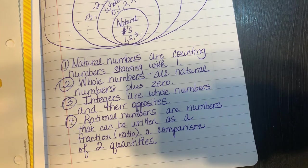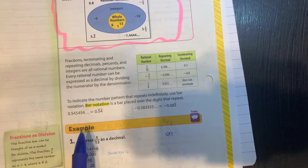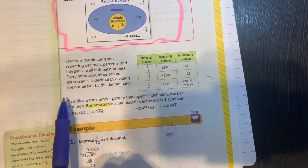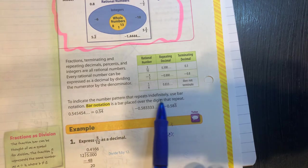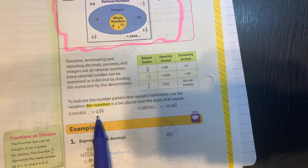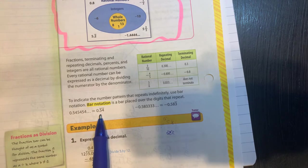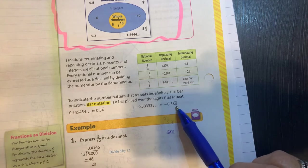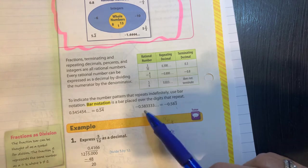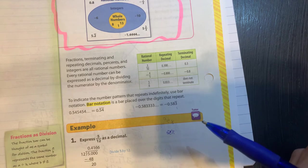So now we're going to go back to where we were on our paper with our notes. So right here in the middle, it says fractions, terminating and repeating decimals, percents, and integers are all rational numbers. Every rational number can be expressed as a decimal by dividing the numerator by the denominator. To indicate the number pattern that repeats, definitely use the bar notation, which is what I was talking about before. But look at these two. This one says 0.545454, so see there's a pattern that repeats. It's not just a single digit. Here you've got negative 0.583333 and it keeps going. So the only thing that's repeating here is just the three, not the entire decimal. So you want to be careful when you're putting your bar notation and make sure that you are just putting it above what is repeating.